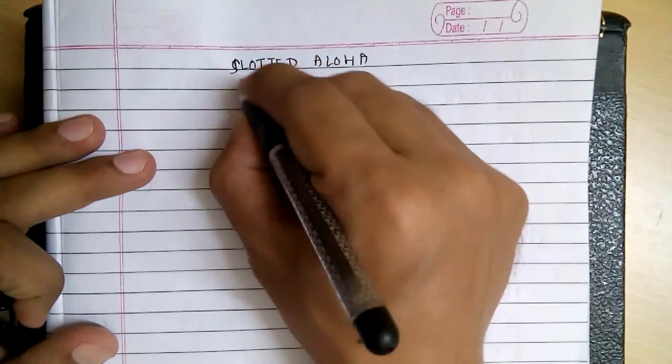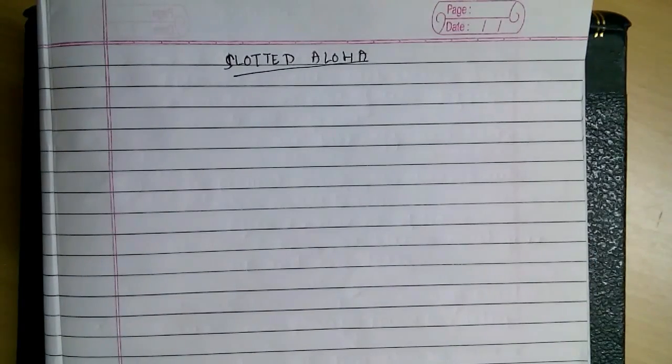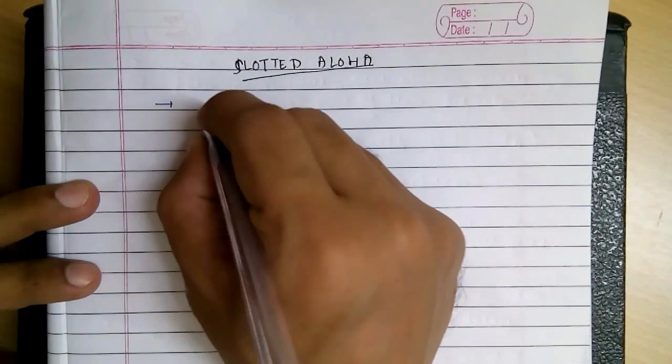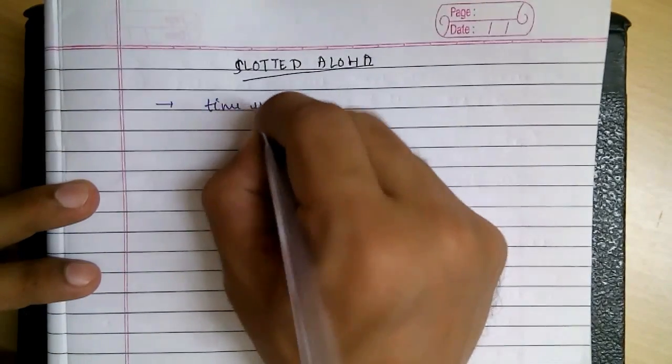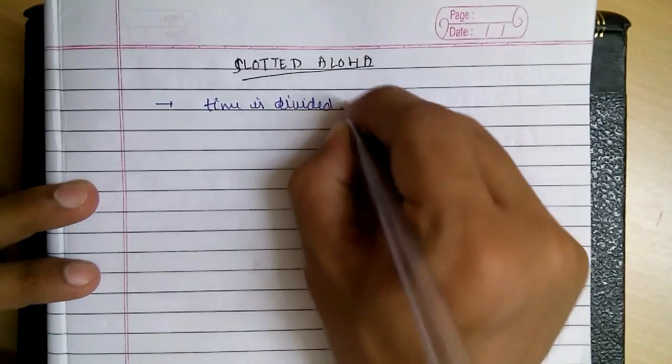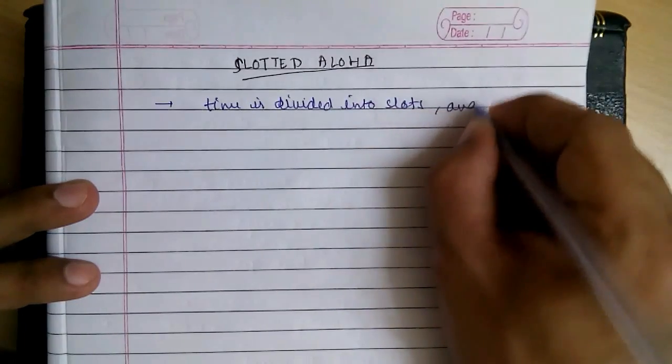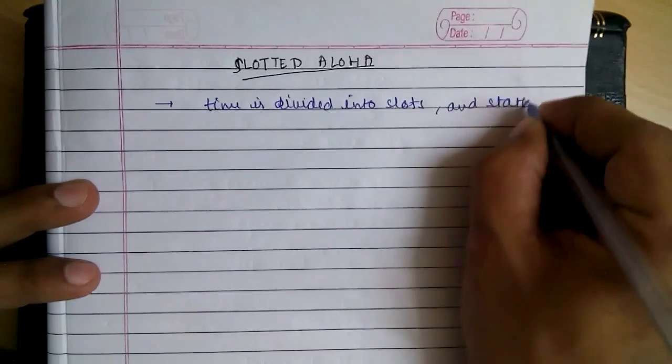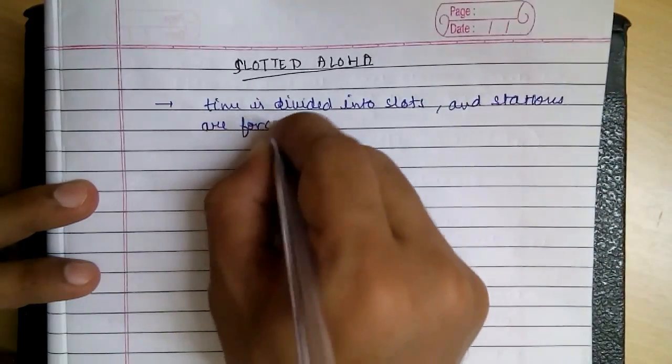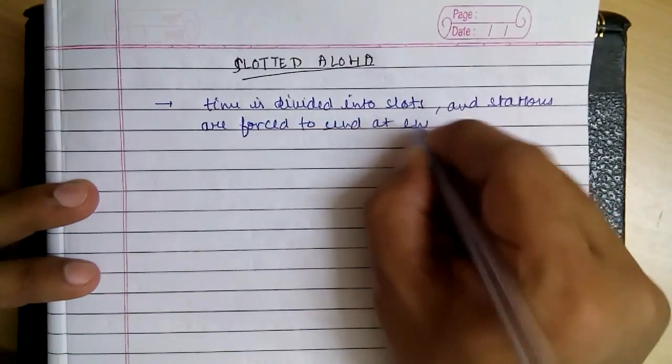We have already seen pure ALOHA, so as you can assume by the name, in slotted ALOHA the time is divided into slots, and stations are forced to send at the beginning of the slot.